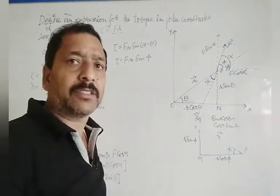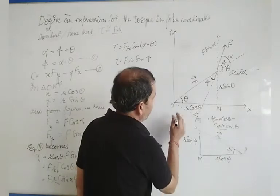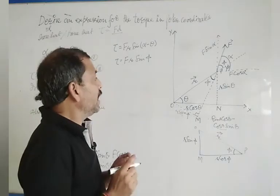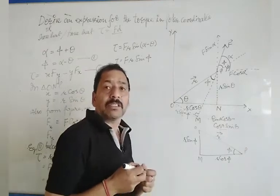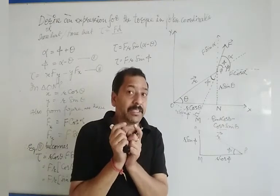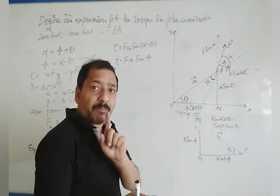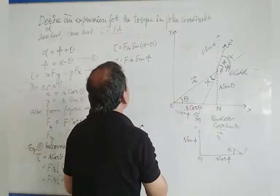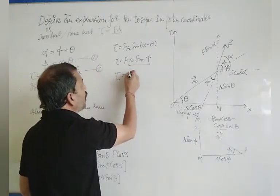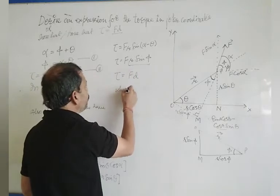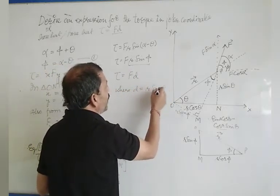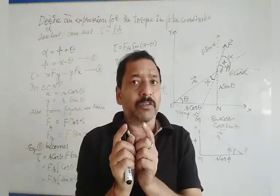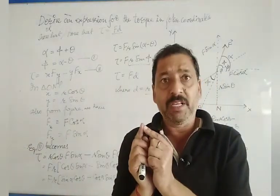And so, dear students, O·M is R sin phi. And we know that the value of the torque, it is the turning effect of force and it is equal to the product of the force applied and the perpendicular distance. And so, dear students, this is the perpendicular distance of the axis of rotation from the line of action of the force.